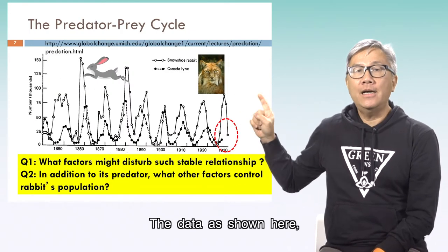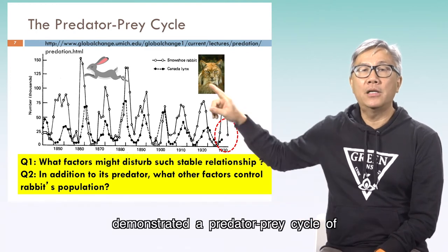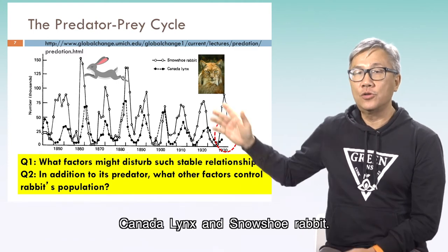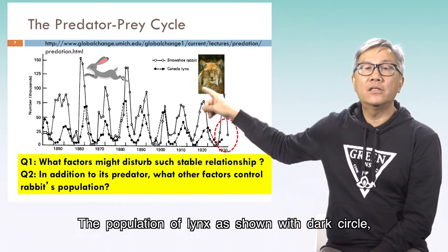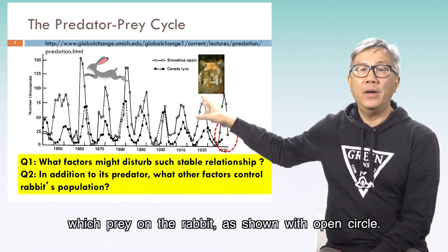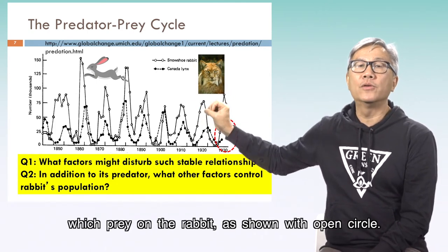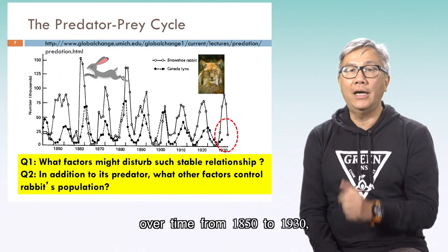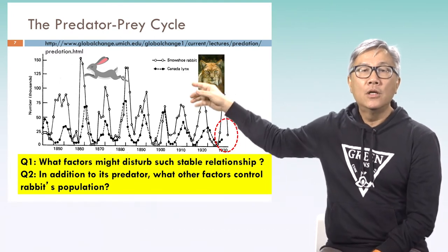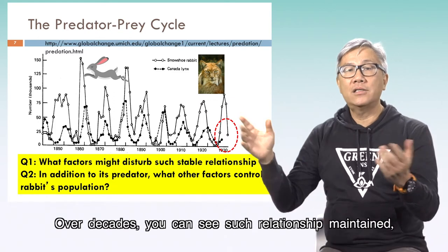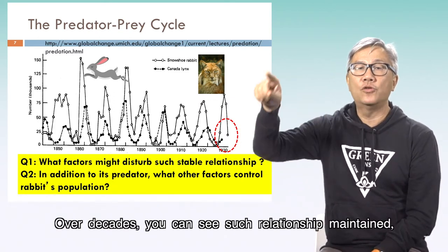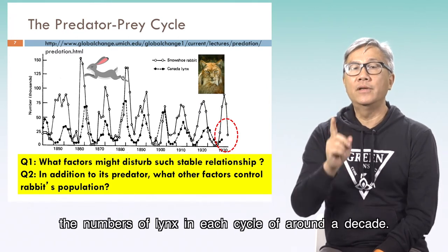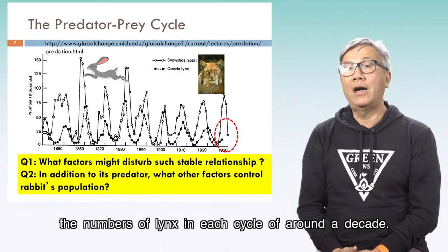The data here demonstrates a predator-prey cycle of two animals: Canada lynx and snowshoe rabbit. The lynx population is shown with dark circles, preying on the rabbit shown with open circles. From 1850 to 1930, as the lynx numbers dropped, rabbit numbers increased. Over each decade, sufficient rabbit numbers could maintain lynx numbers in a cycle of around a decade.